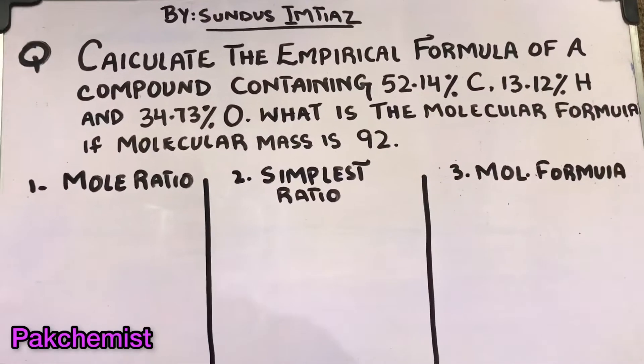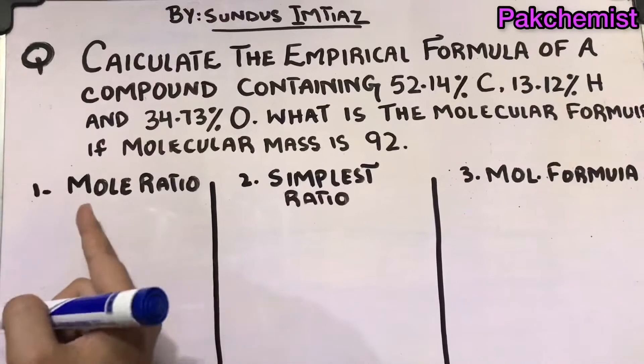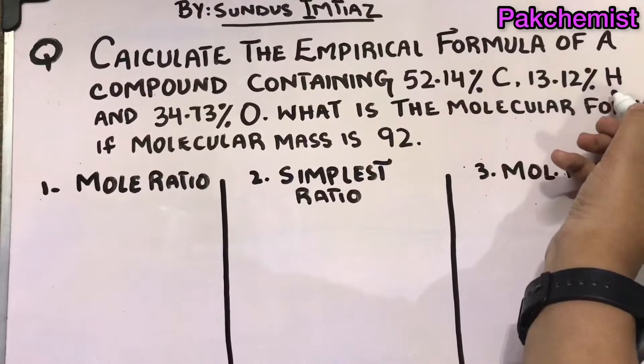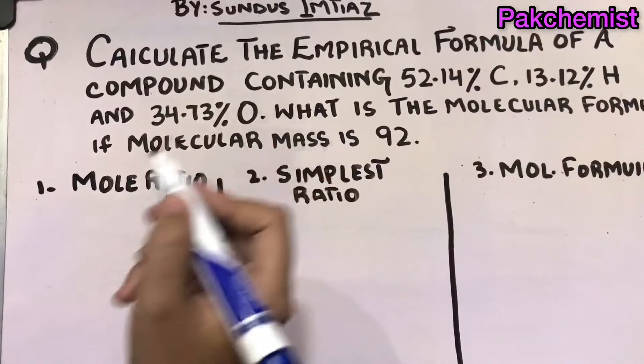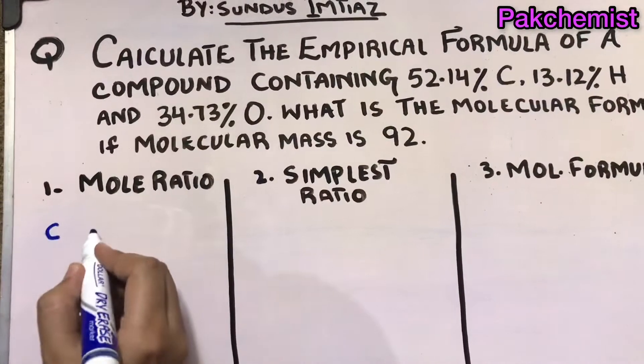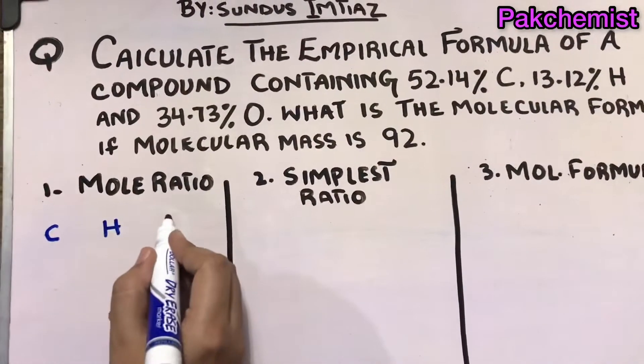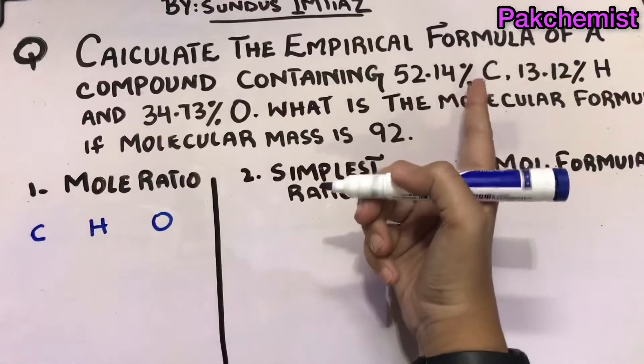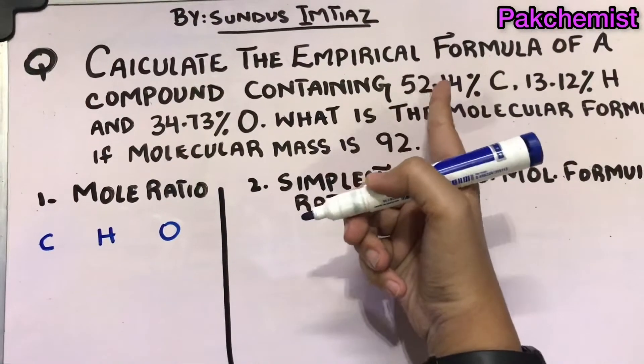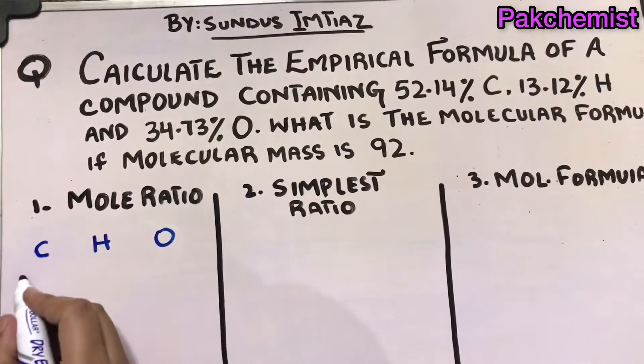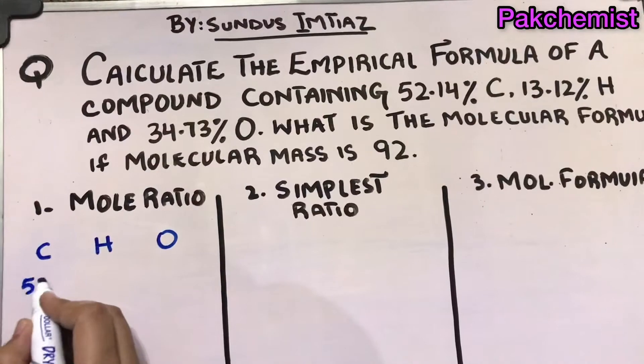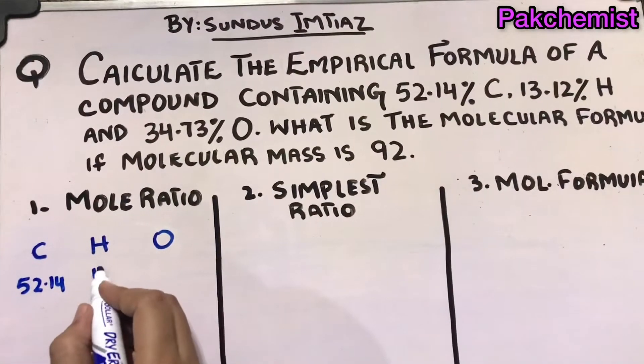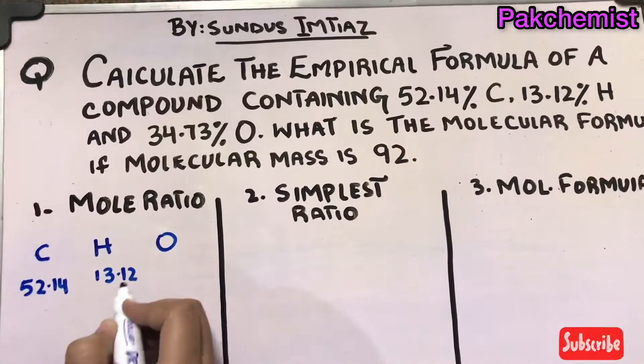Now coming to the mole ratio, first I will write carbon, then hydrogen, then oxygen. Write these atoms in sequential form. Let's see what is the percentage of carbon - it is 52.14%, so you will write 52.14% of carbon, 13.12% of hydrogen, 34.73% of oxygen.